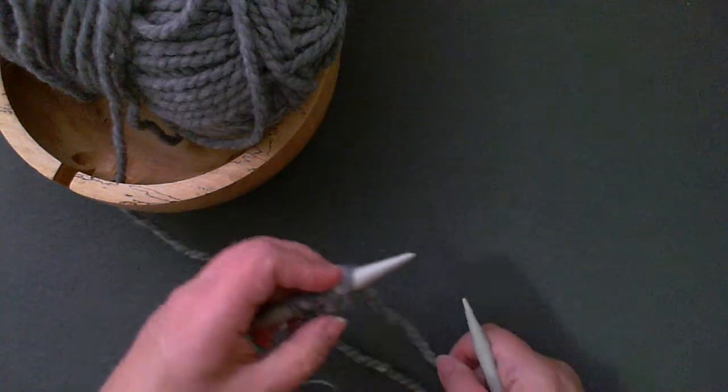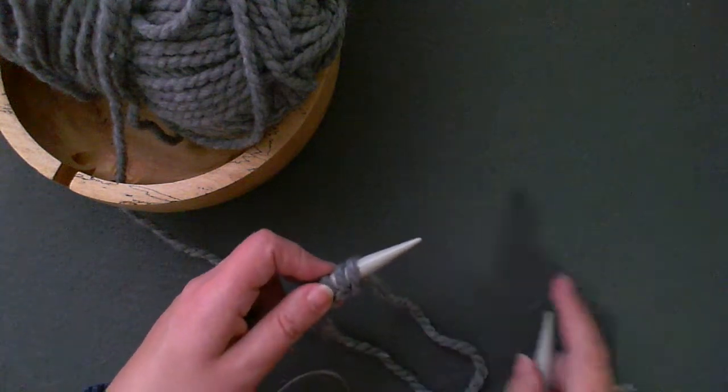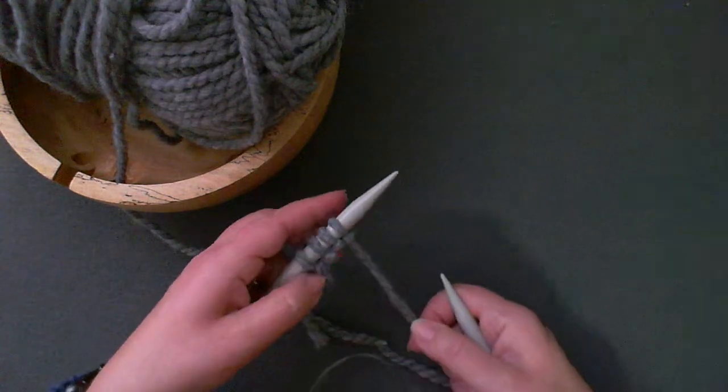You'll notice that when I put this loop back onto the left hand needle, it looks like two stitches. You don't want to stop there, you're only creating one stitch at a time.